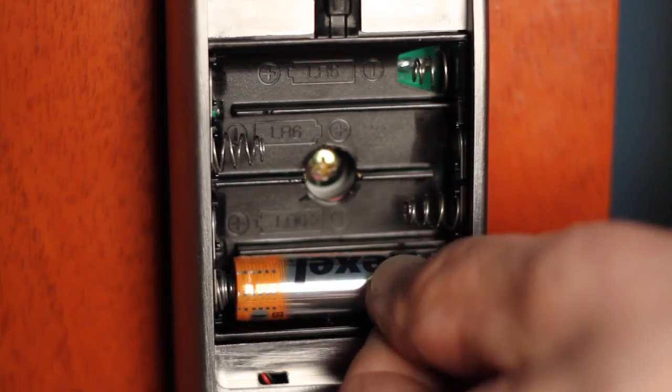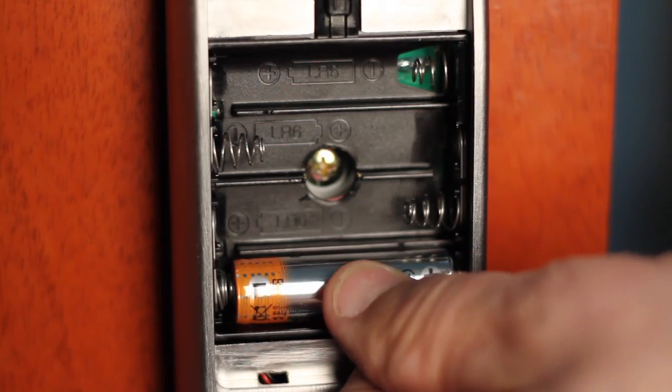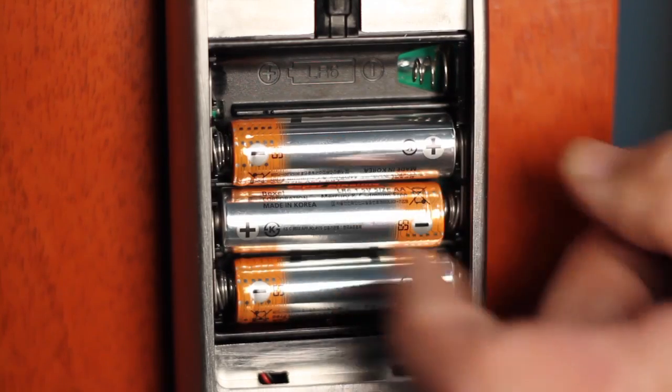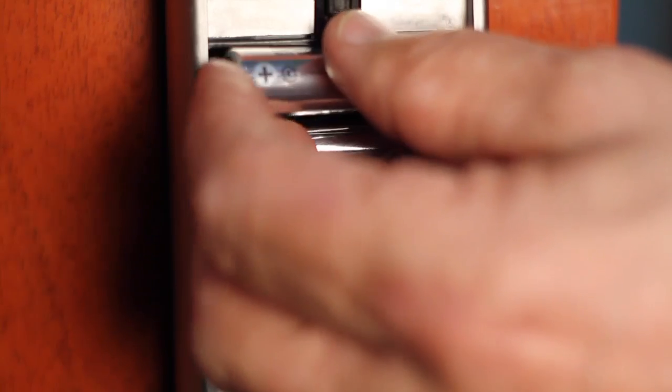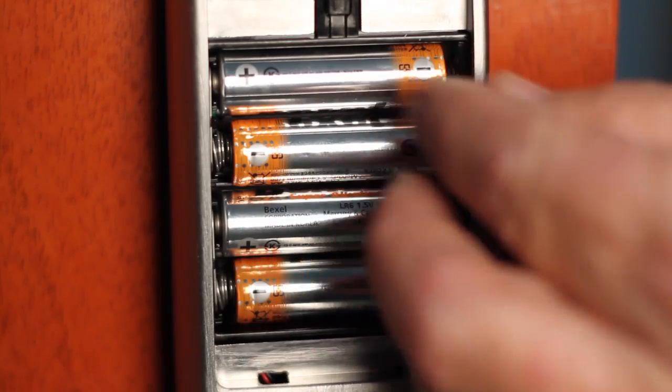You are now ready to install the four AA alkaline batteries into the battery housing, noting the polarity of each. Correctly installed batteries will wake up the lock and it will respond by saying, Welcome to the Yale digital world.